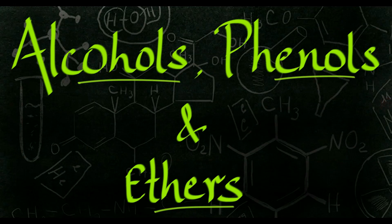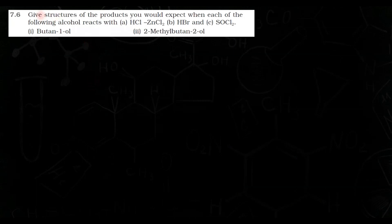Hello everyone. We are solving the in-text questions of the chapter Alcohols, Phenols and Ethers, and today we will solve question number 6. The question says: give structures of the products you would expect when each of the following alcohols reacts with HCl-ZnCl2, HBr, and SOCl2.